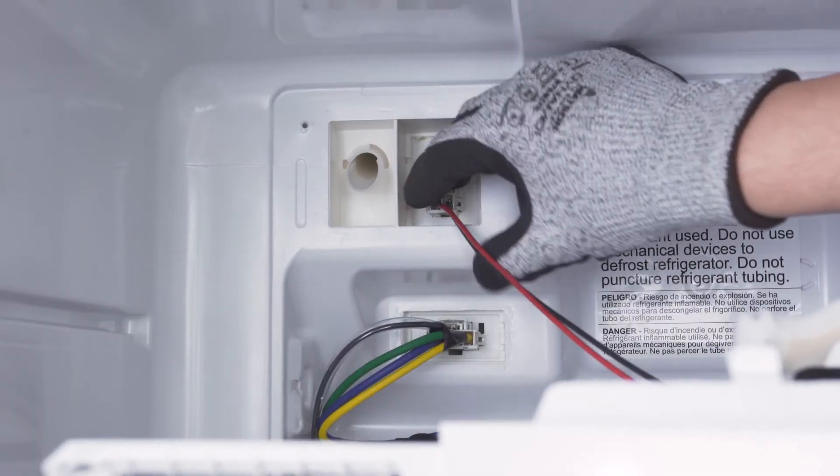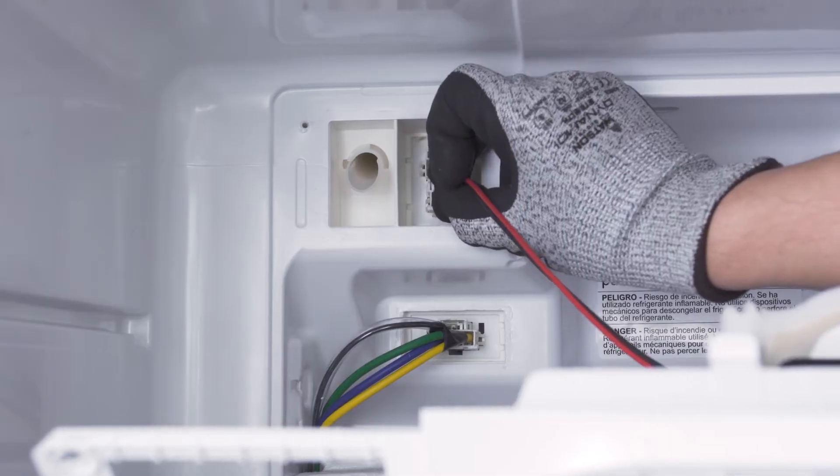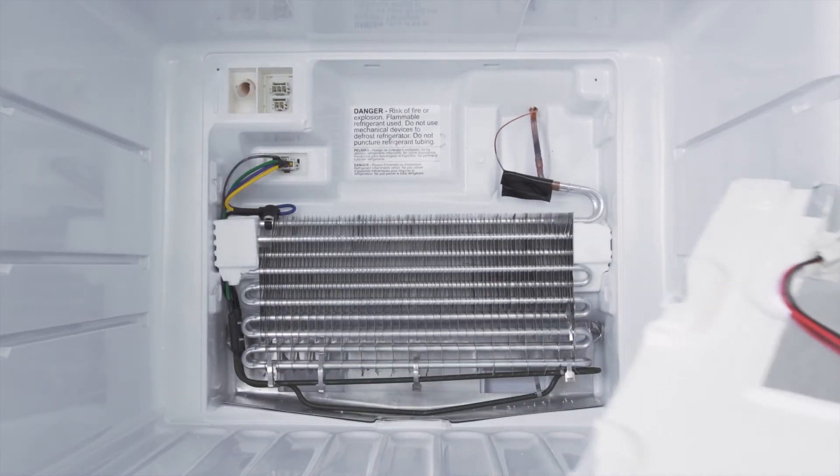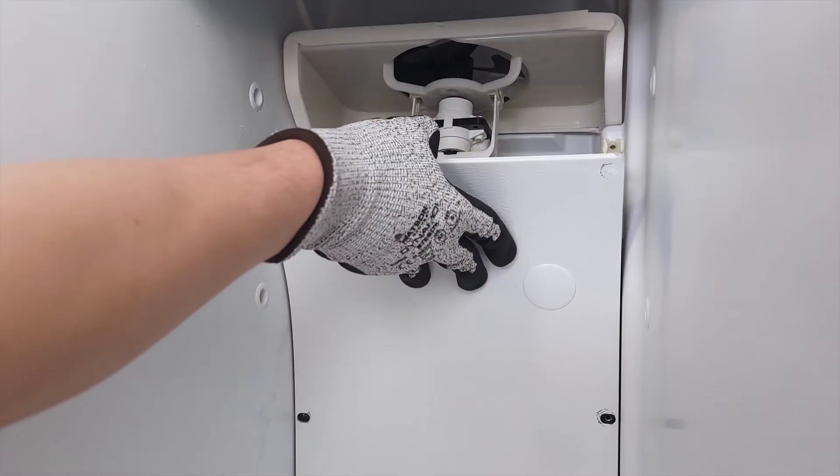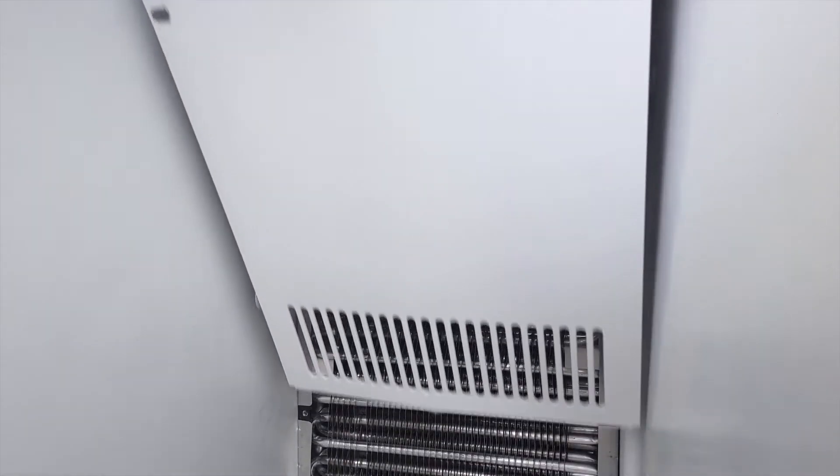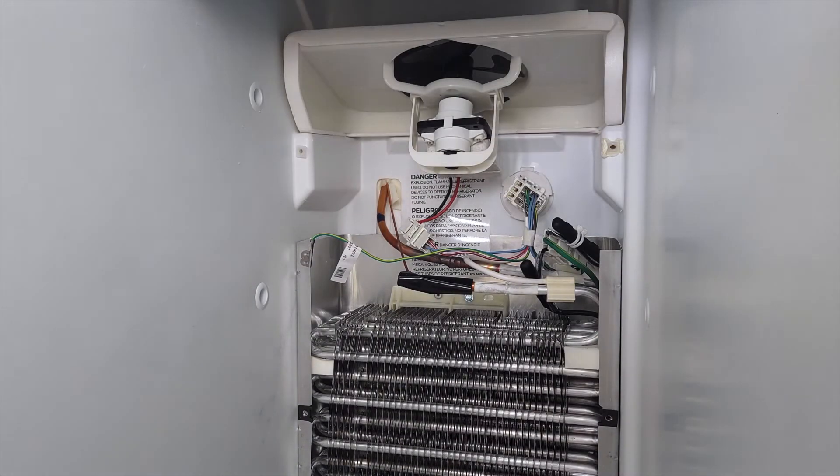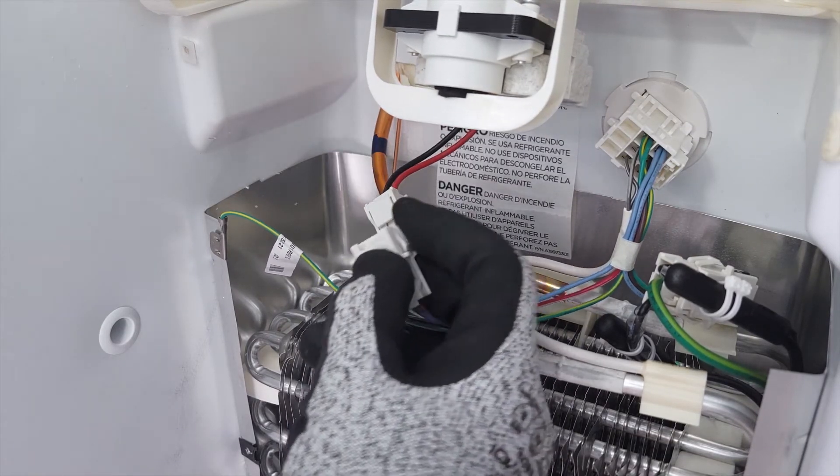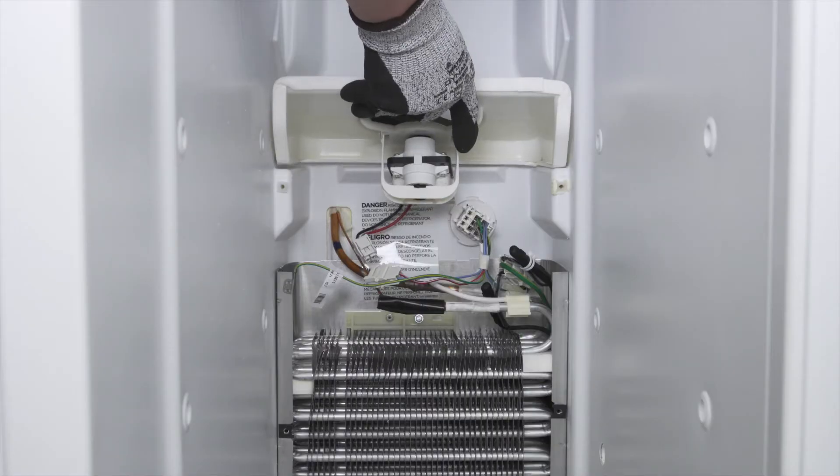If the fan is mounted to the panel, you might need to disconnect the wire harness. In a side-by-side fridge, the fan will likely be mounted above the evaporator coils. To isolate the fan, disconnect the wires and remove it.